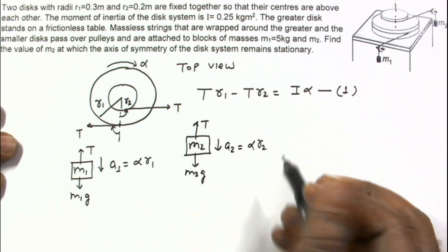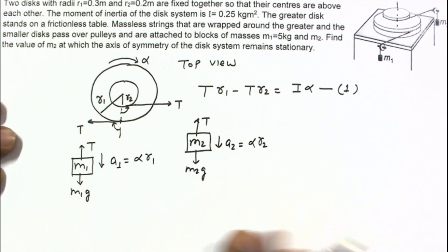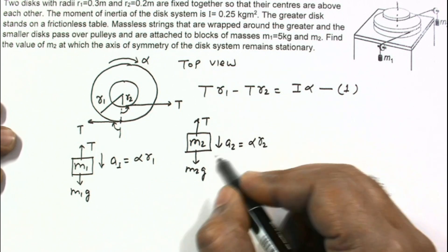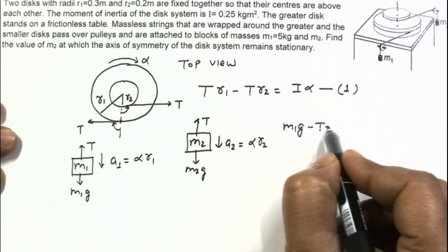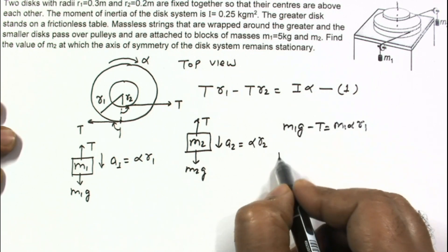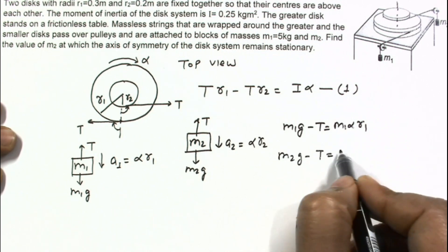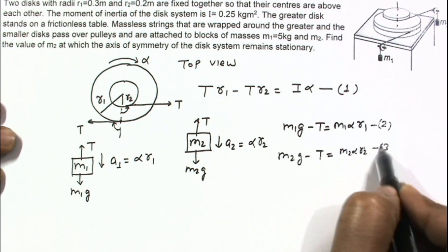Making two equations for Newton's second law for the two blocks. The first equation for this block is M1G minus T equals M1 alpha R1. M2G minus T equals M2 alpha R2. This is equation number two, this is equation number three.